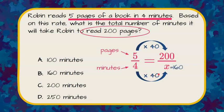4 times 40 is 160, and therefore we know that 160 minutes is how long it will take Robin to read 200 pages.